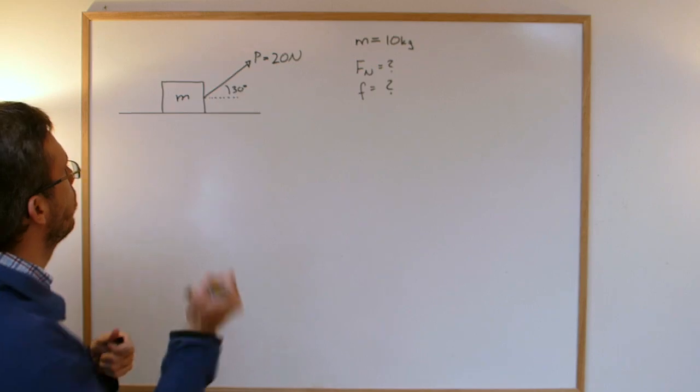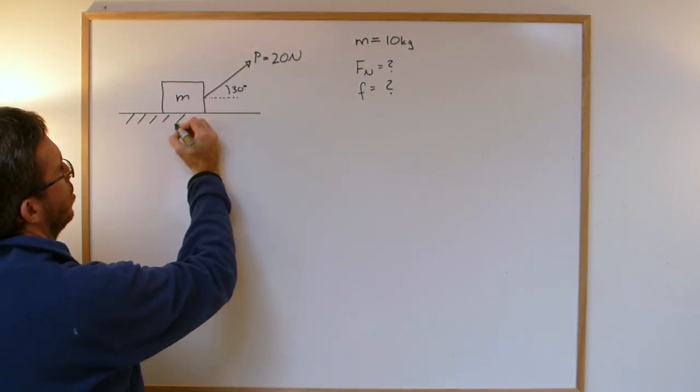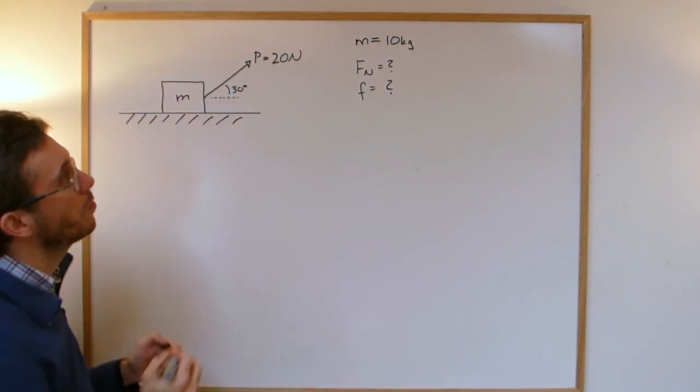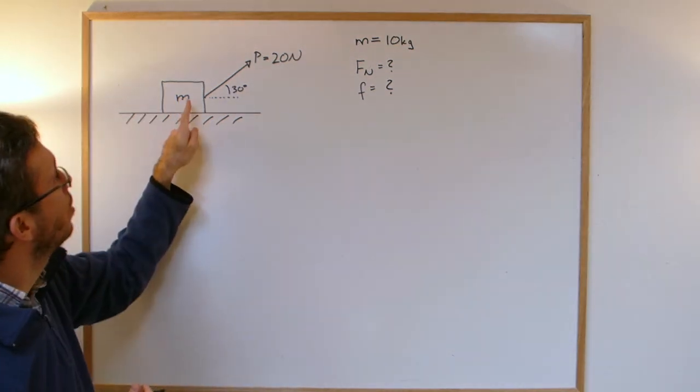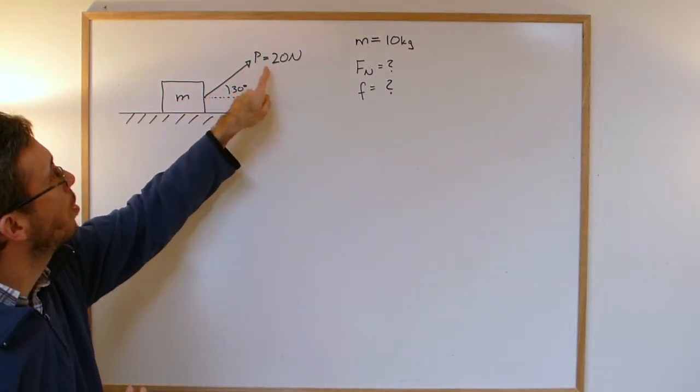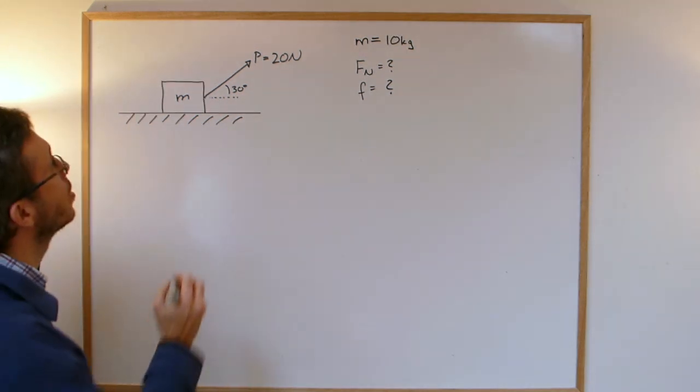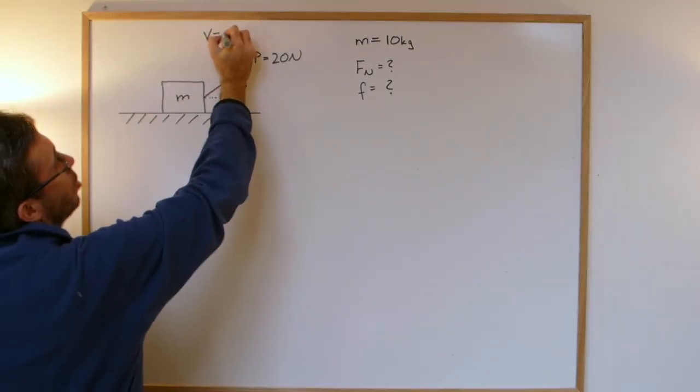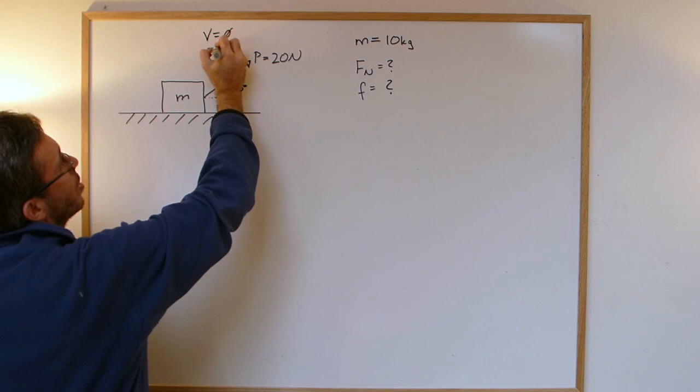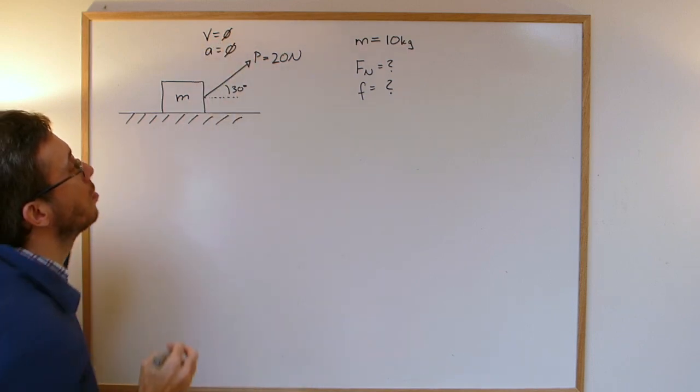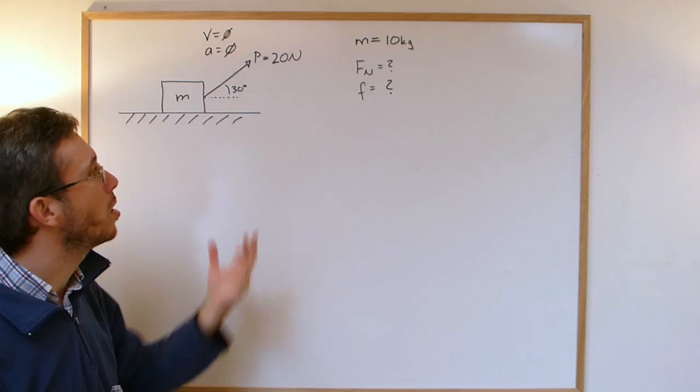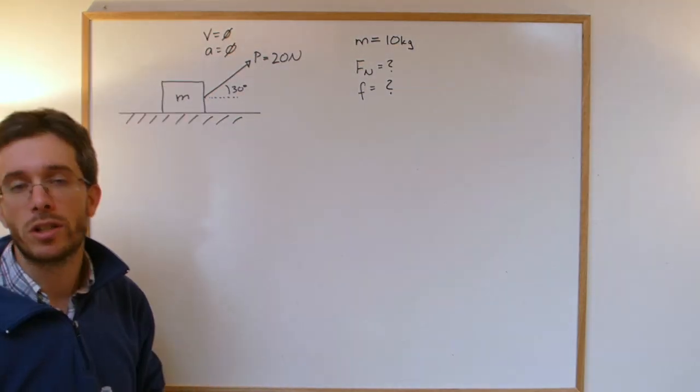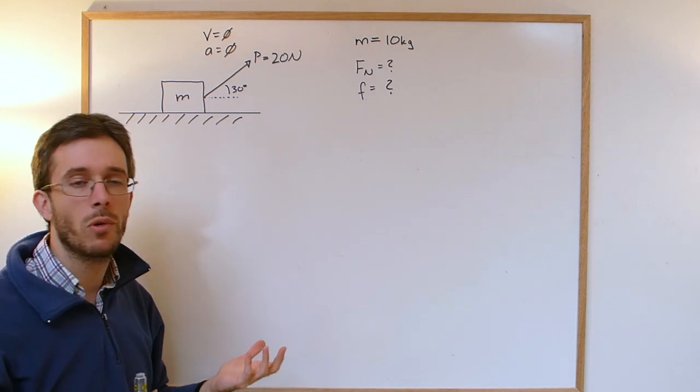So this problem here, classical problem, we have a box that is on a surface. The box has a mass of 10 kilograms. We are pulling on the box with 20 newtons but we're not going anywhere. So no acceleration and no speed, and the question is what is the normal force of the box and what must be the friction that is acting on the box at that moment.